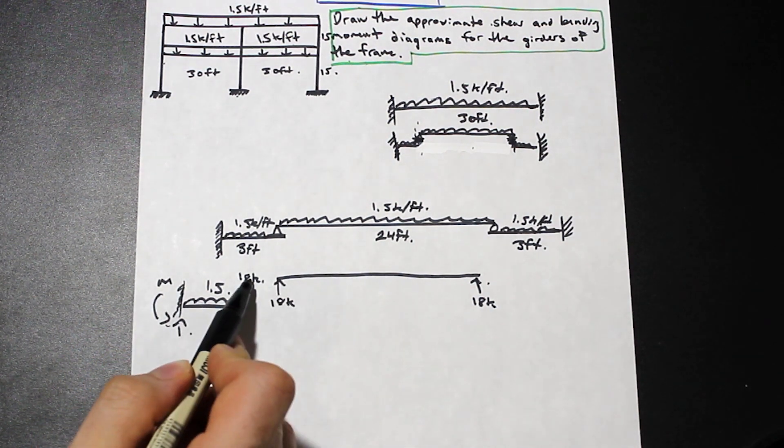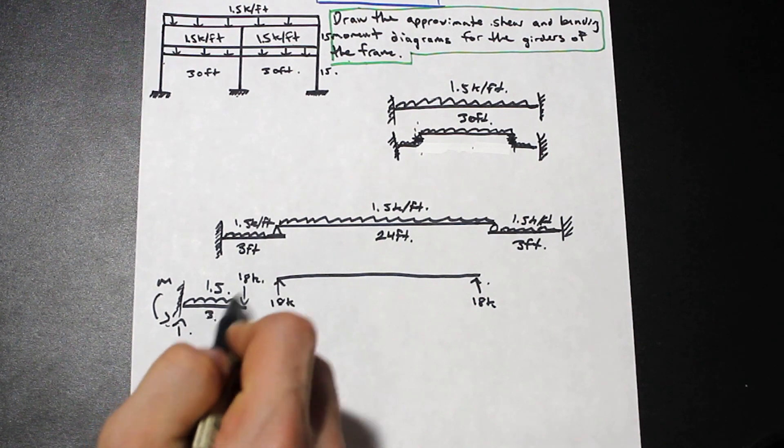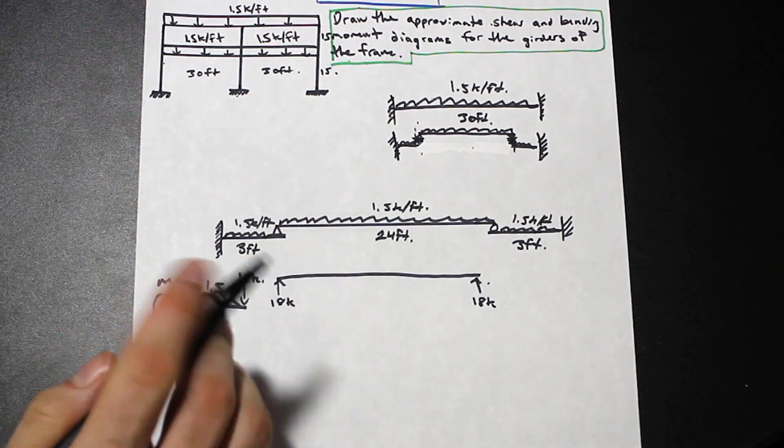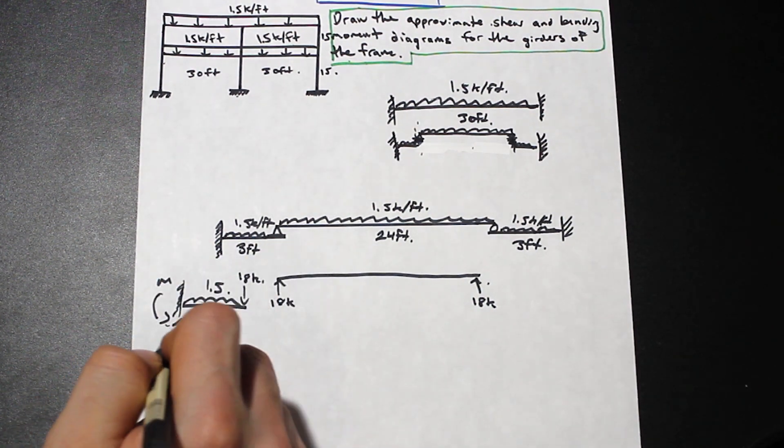So the shear of this is simply just going to be this plus 1.5 times 3, obviously, right, because just the sum there. So that's going to be 22.5.